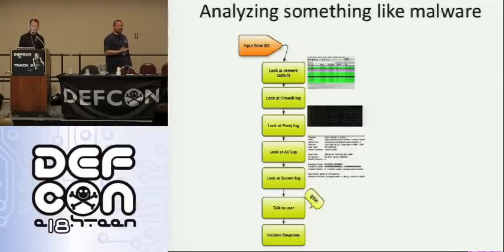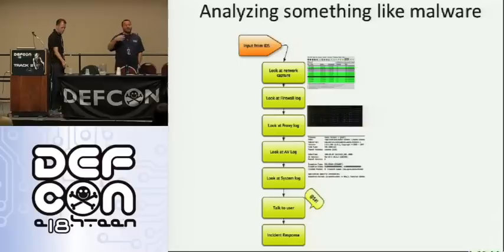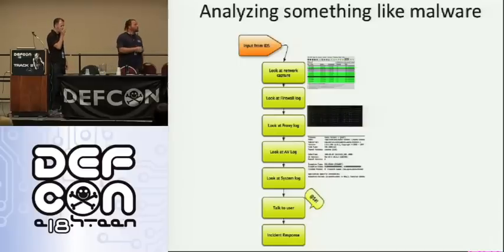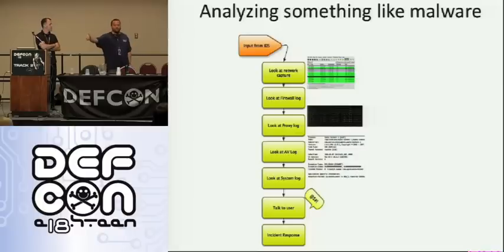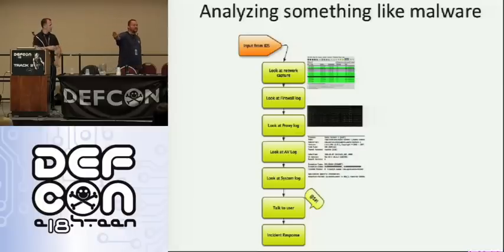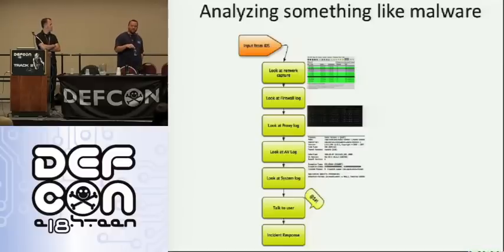You need to get those firewall logs, though, because if you get infected with malware, chances are it might go out and try to download more malware. There are a number of Trojans that will do that. So you want to know if your firewall is blocking those connections. If the firewall is dropping them, depending on where your IDS is placed on your network, it may not trigger — because if your firewall drops the traffic before it gets to your IDS, you won't get an alert. The proxy log shows where the user was before they got the malware — that's where the malware probably came from.